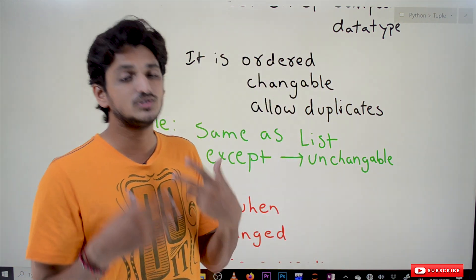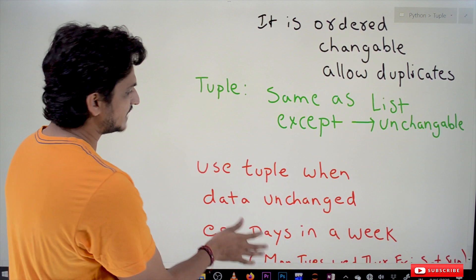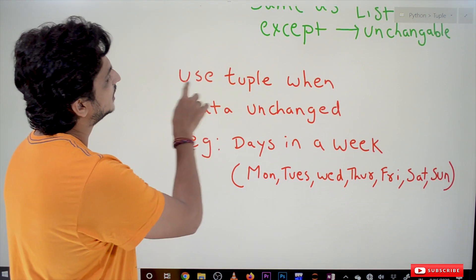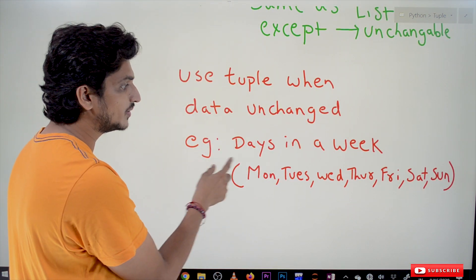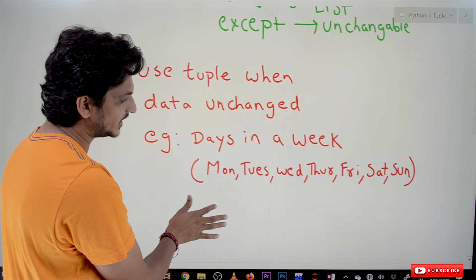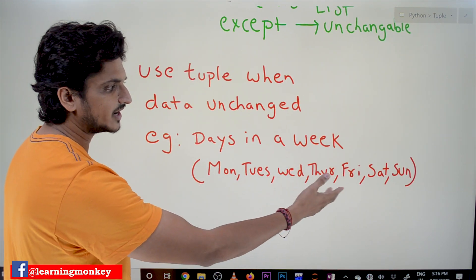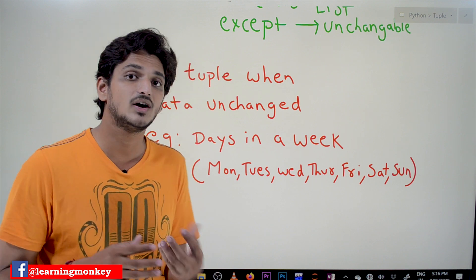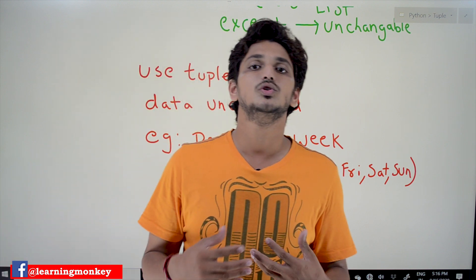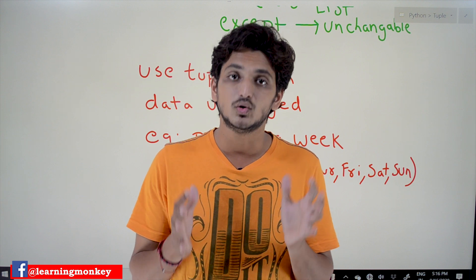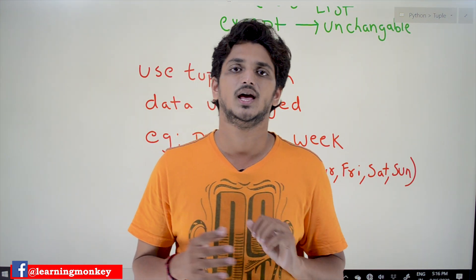Let's take examples of situations where we use tuple. We use tuple when data is unchanged. For example, days in a week — Monday, Tuesday, Wednesday, Thursday, Friday, Saturday, Sunday. Days in a week are not changed. In this situation, we use tuple data type. If you want to change the data, then use list data type.